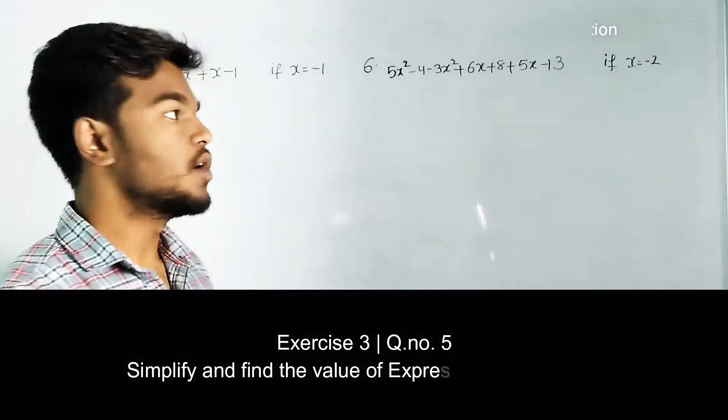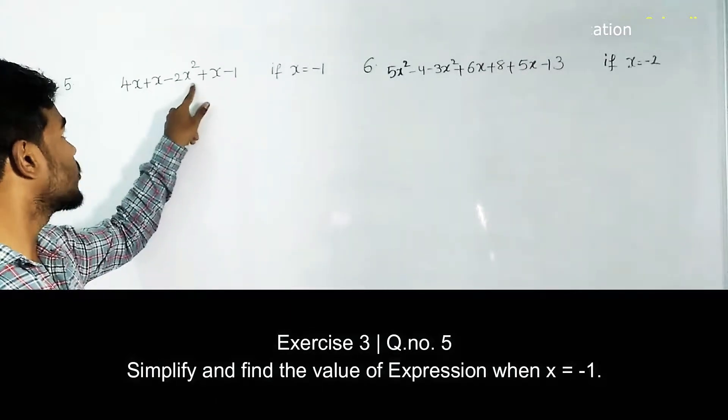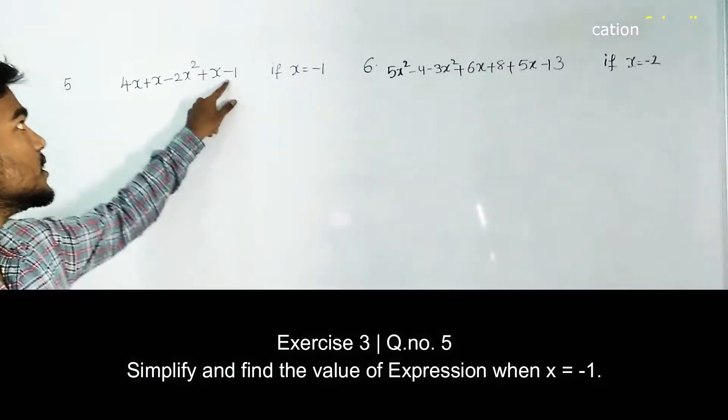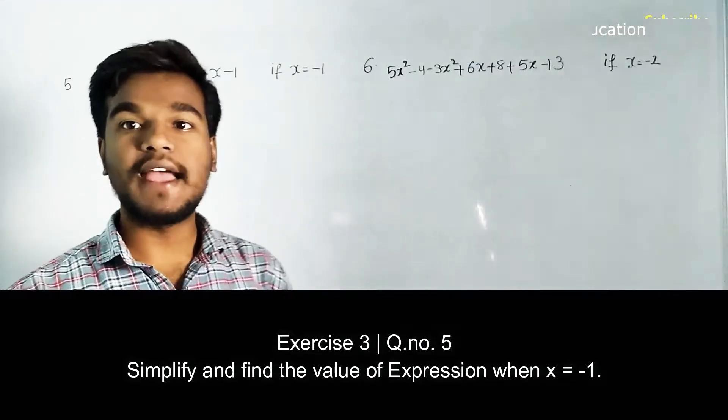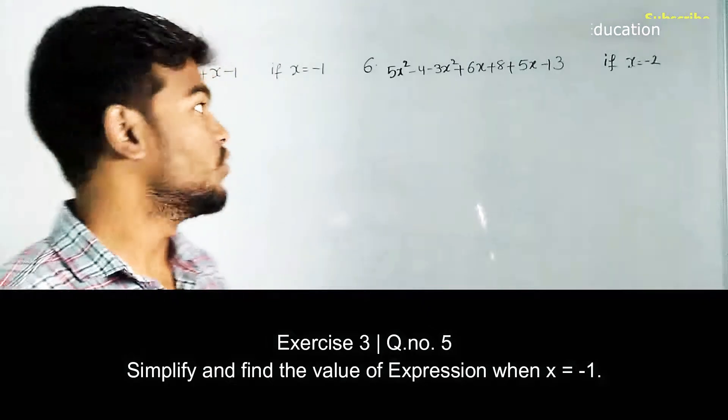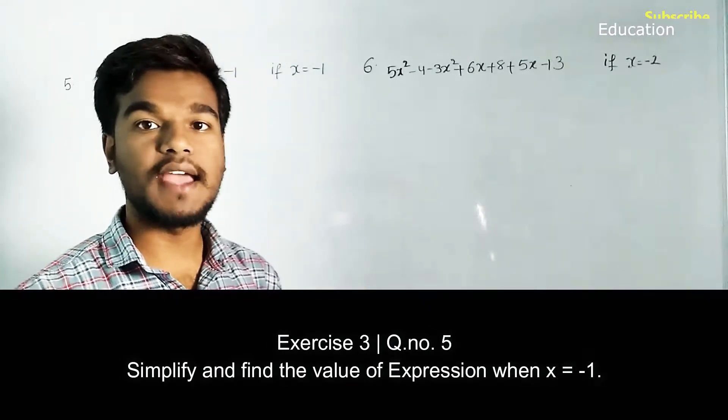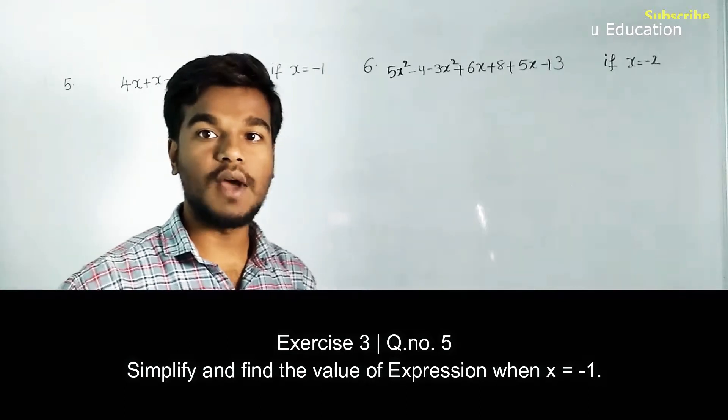Here the question is 4x + 5 - 2x² + x - 1. First we have to simplify the given equation and substitute the variable value x = -1, then find the value.